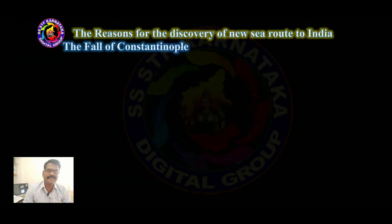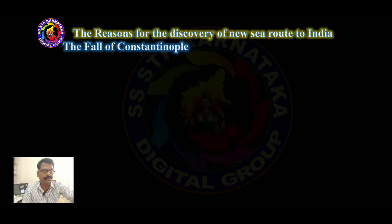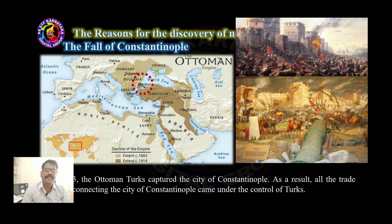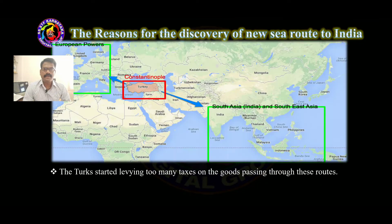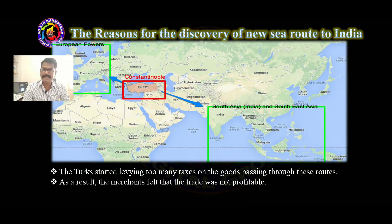The reasons for the discovery of a new sea route to India. The first reason: the fall of Constantinople. In 1453, the Ottoman Turks captured the city of Constantinople. As a result, all the trade routes connecting Constantinople came under the control of the Turks. The Turks started levying too many taxes on the goods passing through these routes. As a result, the merchants felt that the trade was not profitable.